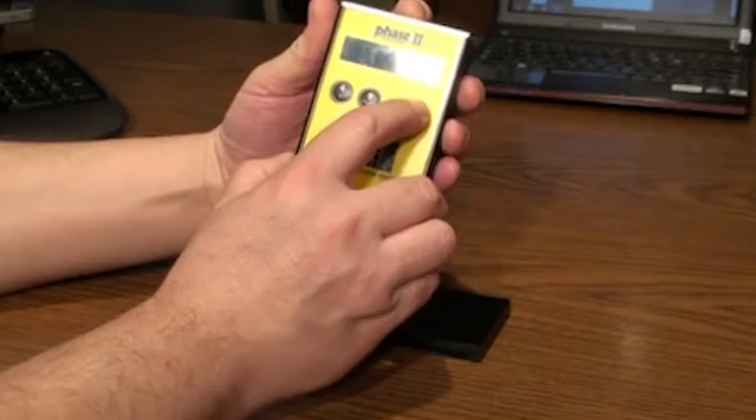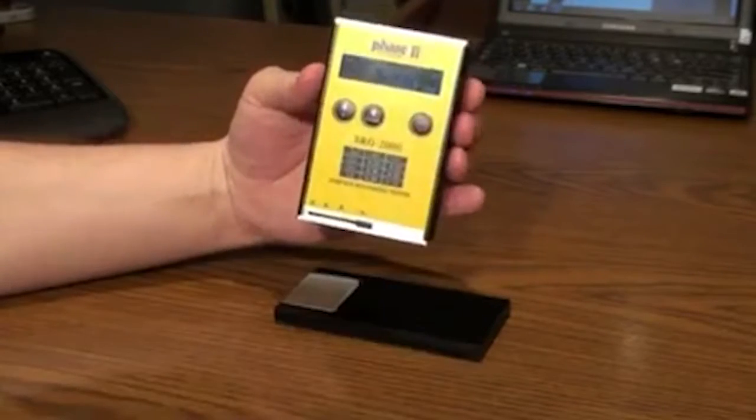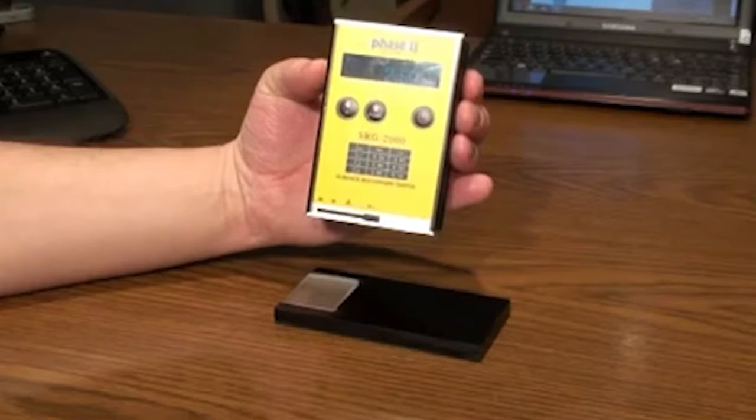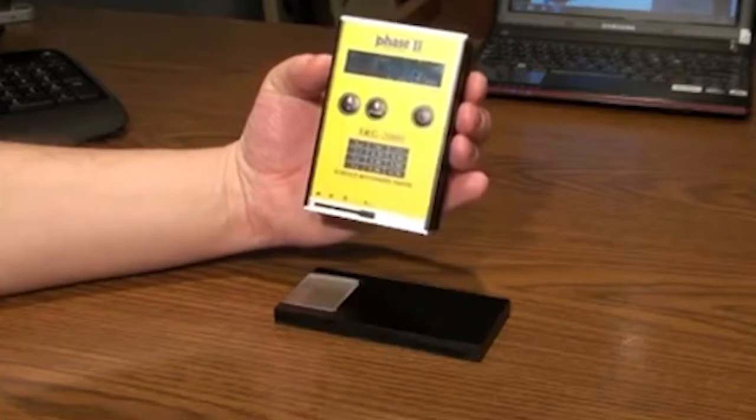When a beep sounds, release the button and the device enters its calibration mode. The LCD screen should read Cal and there will be an RA value on the display.